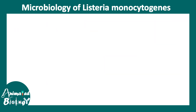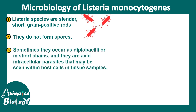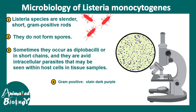Let's talk about the microbiology of Listeria monocytogenes. These are slender short gram-positive rods. They do not form spores like many gram-positive bacteria, and sometimes they occur in diplo-bacilli format or in short chains. They are avid intracellular parasites. As they are gram-positive, in a slide they would stain dark purple.